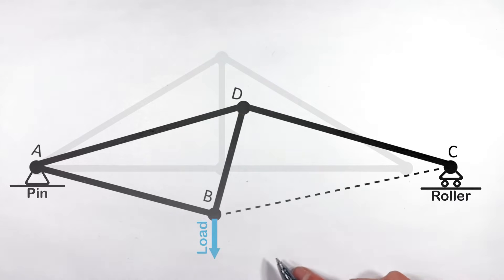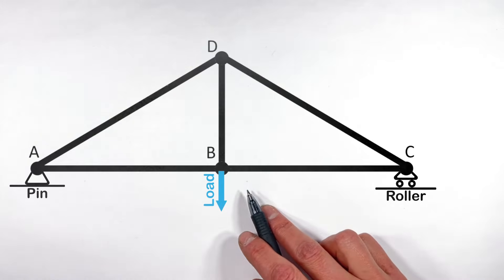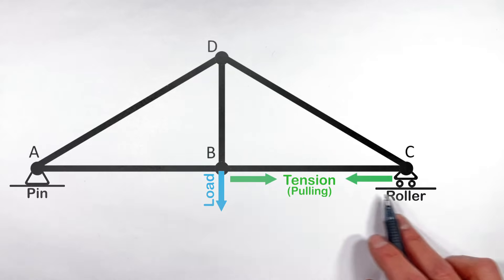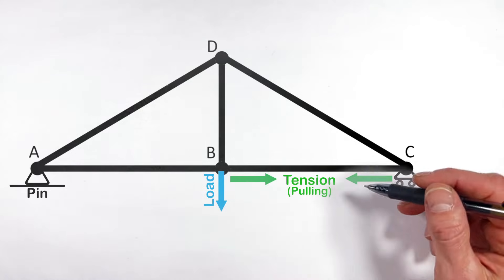And what that means is the distance between joint B and joint C is going to grow. Ultimately, what that means is that in order to hold the truss up, this beam BC has to be pulling these two joints together, meaning the beam or member is under tension.